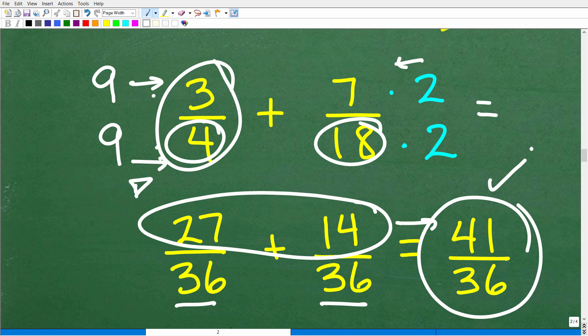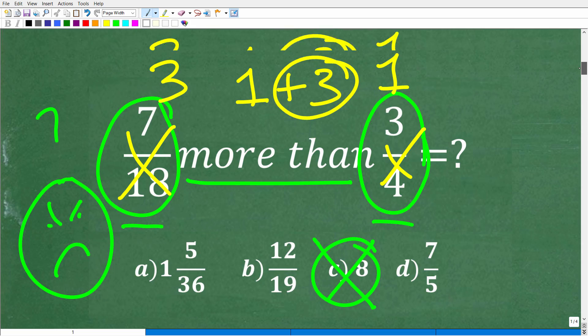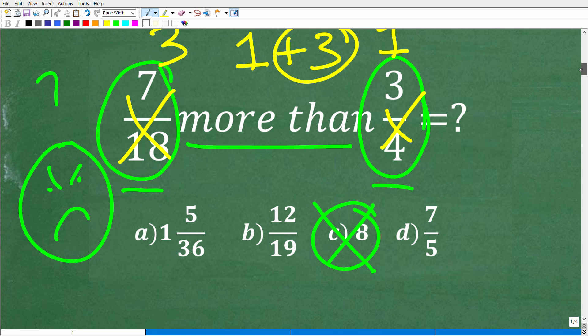Okay, so how do we change an 18 to a 36? Going to multiply by 2. So we're going to multiply the numerator by 2. So we're going to end up with 14 over 36. And now we can actually add these fractions because the denominators are the same. So what you do here is add the respective numerator. So 27 plus 14 is 41 over 36. Now, if some of you got to this point, that is fantastic. Matter of fact, I would give you a happy face.